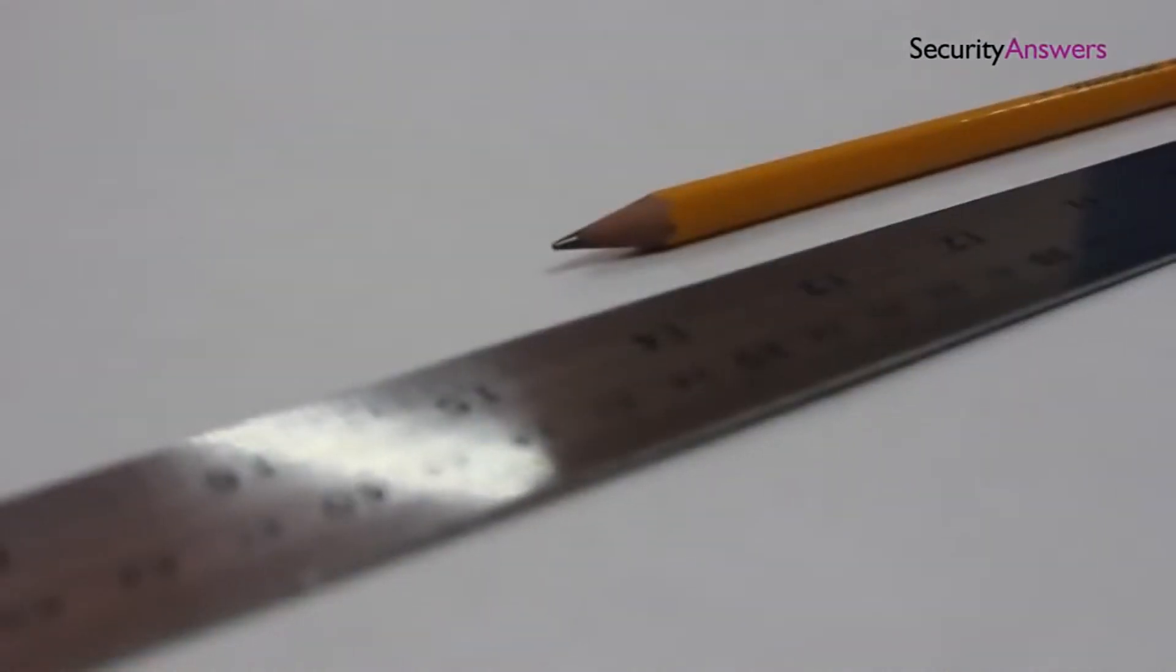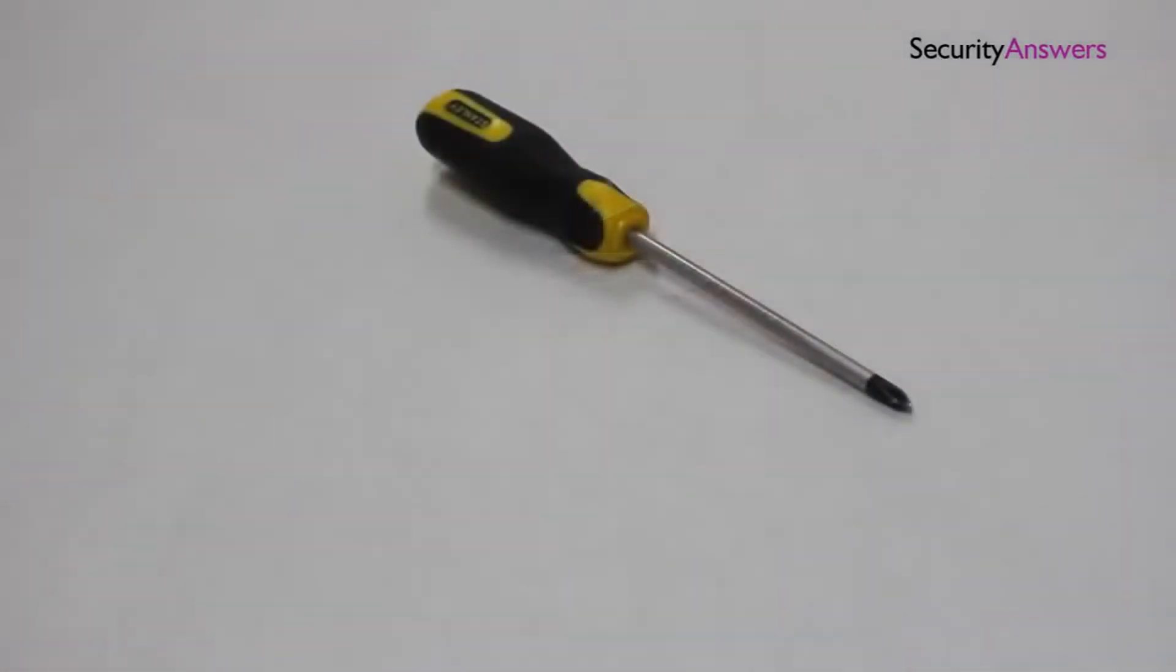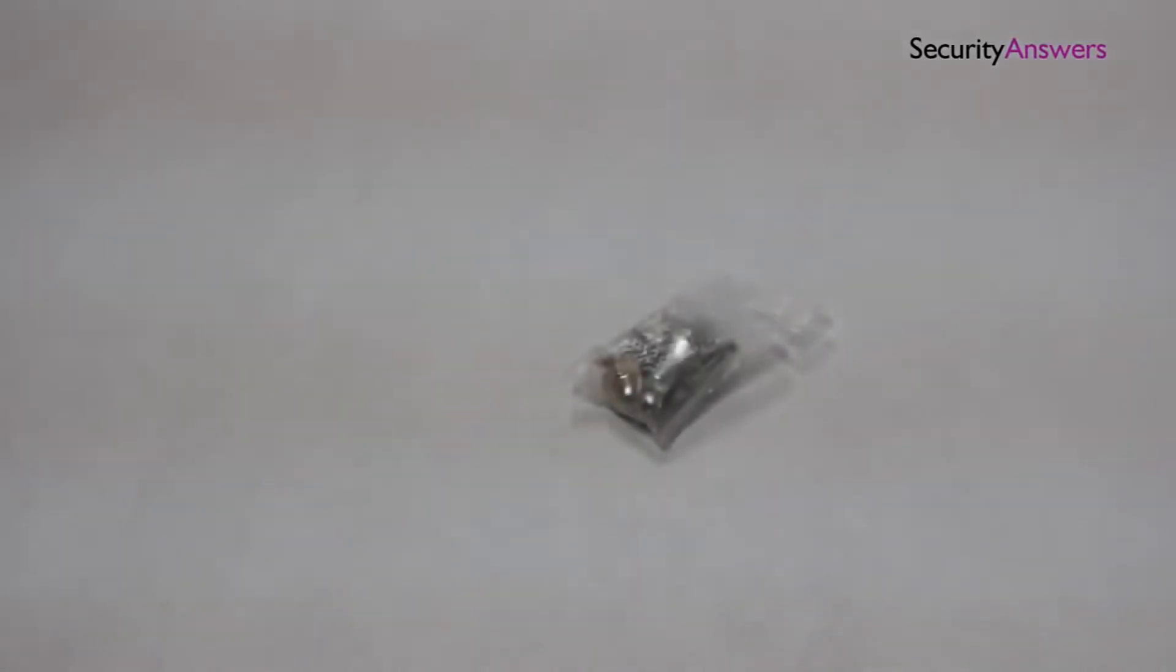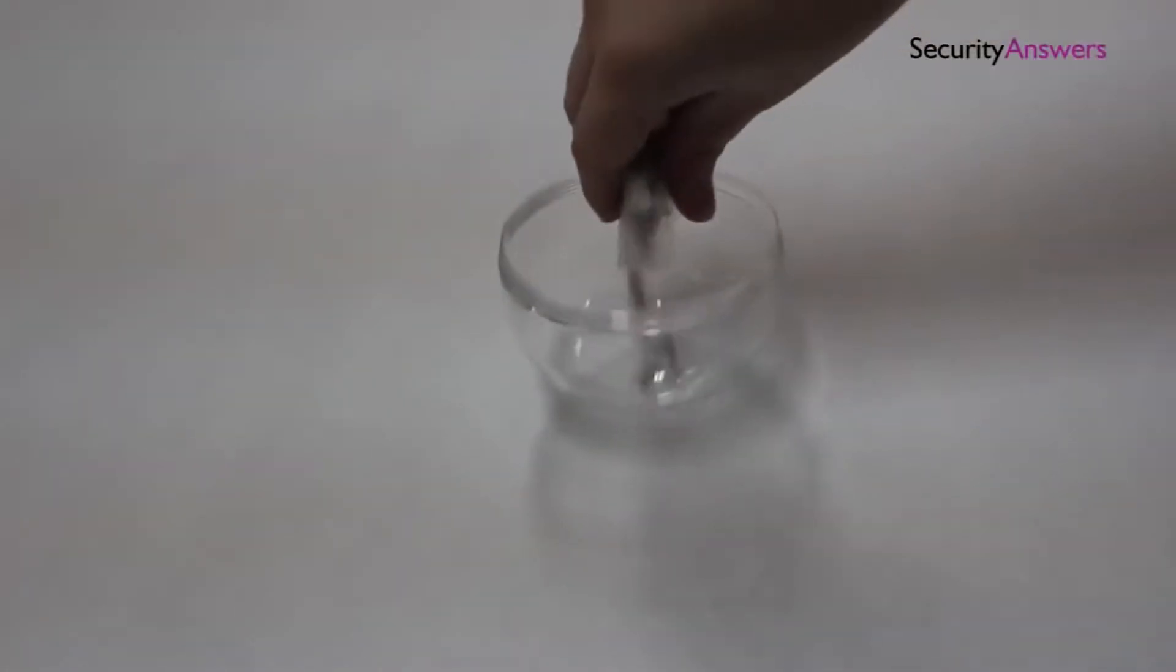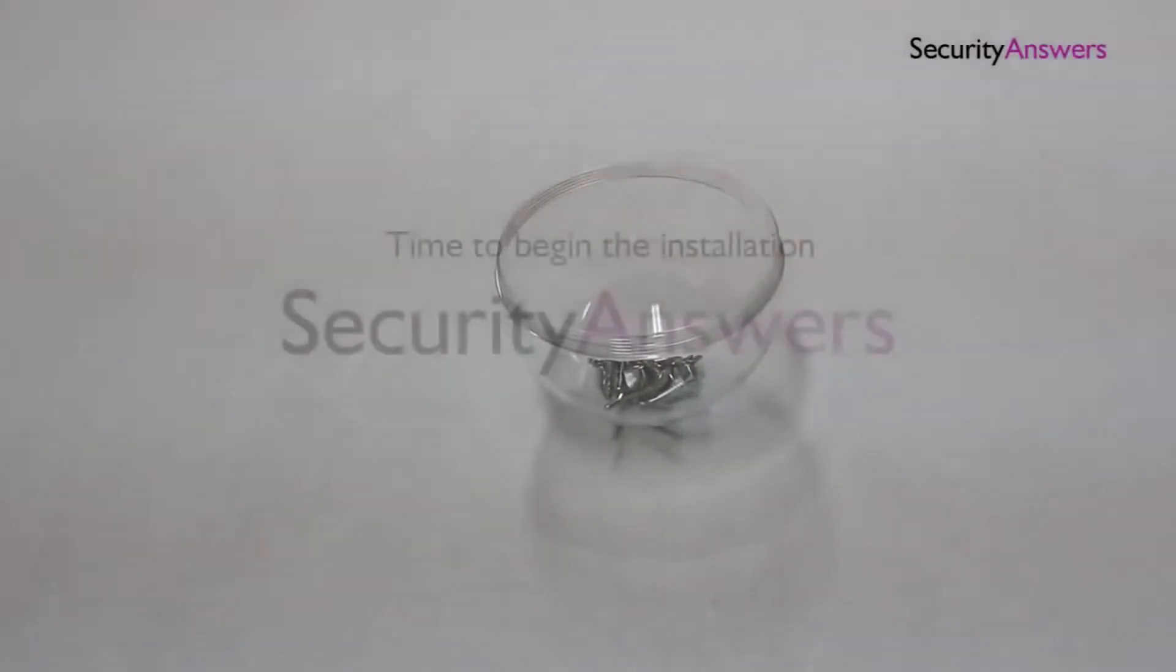A ruler and pencil for marking the position of the locks. A Phillips screwdriver. Each lock should come with all the correct screws for proper installation. We place our screws in a small container to ensure we do not misplace any of the components.